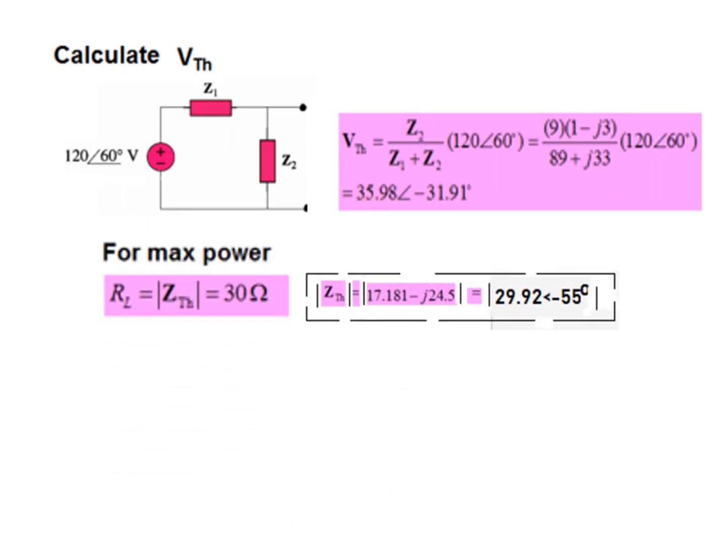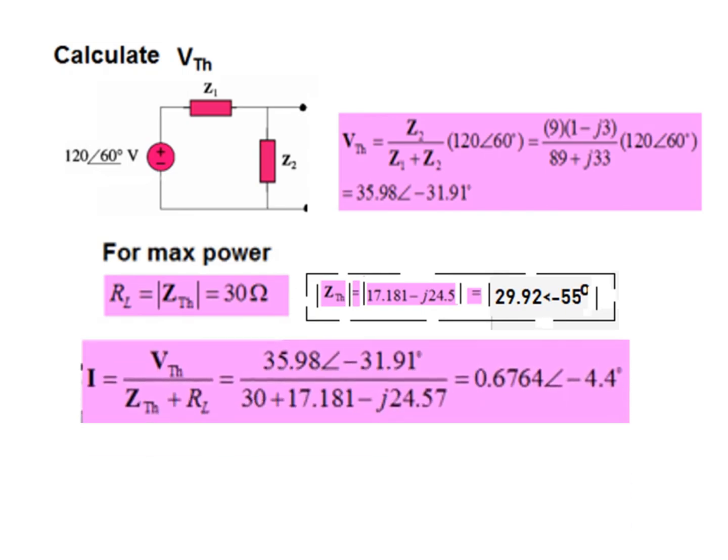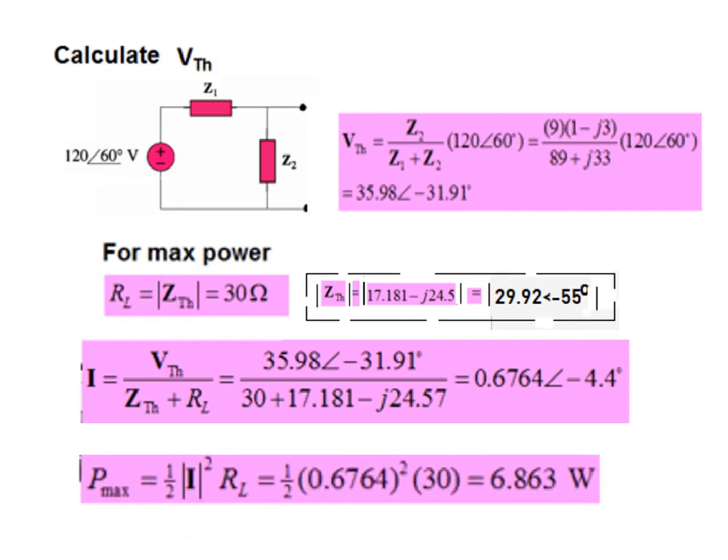For maximum power, R_L has to equal the magnitude of Z_Thevenin when the load is resistive. By solving, we find it to be 30 ohms. Taking the magnitude gives 29.92, which we can round to 30 ohms. Now we find the current: I equals V_Thevenin divided by Z_Thevenin plus R_L, which is 0.6764 amperes. Power is one-half I squared R_L, which gives us 6.863 watts.